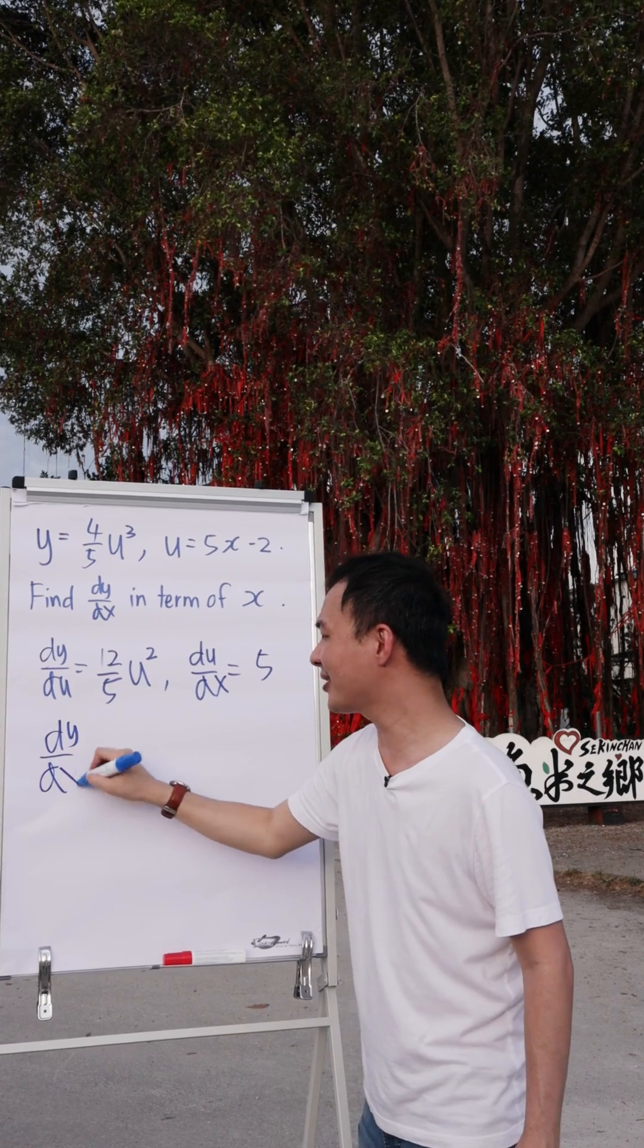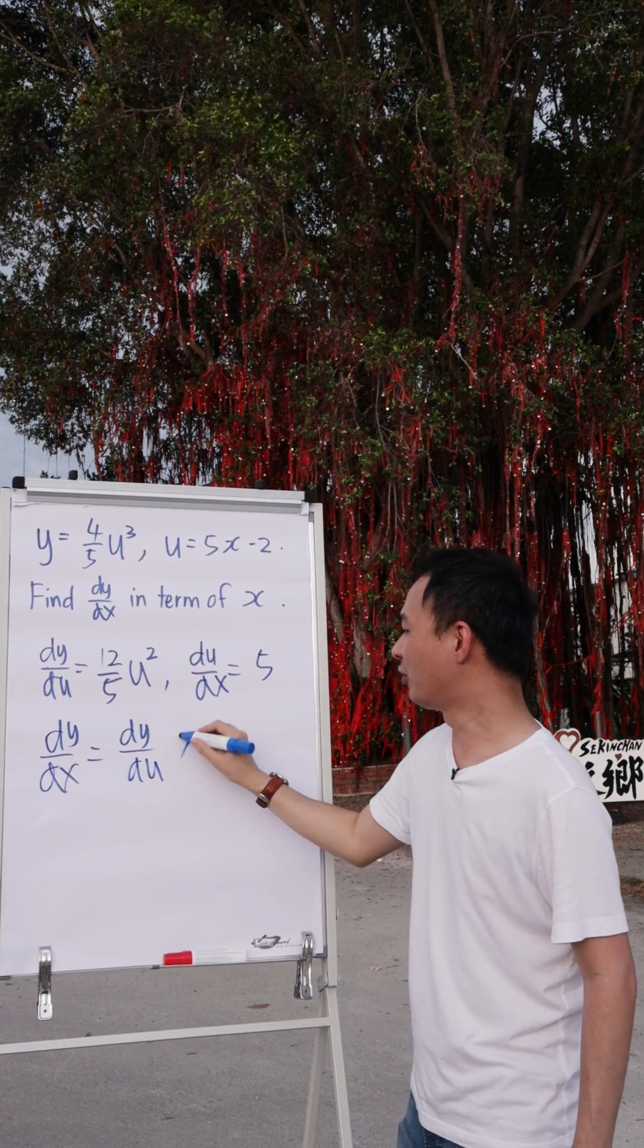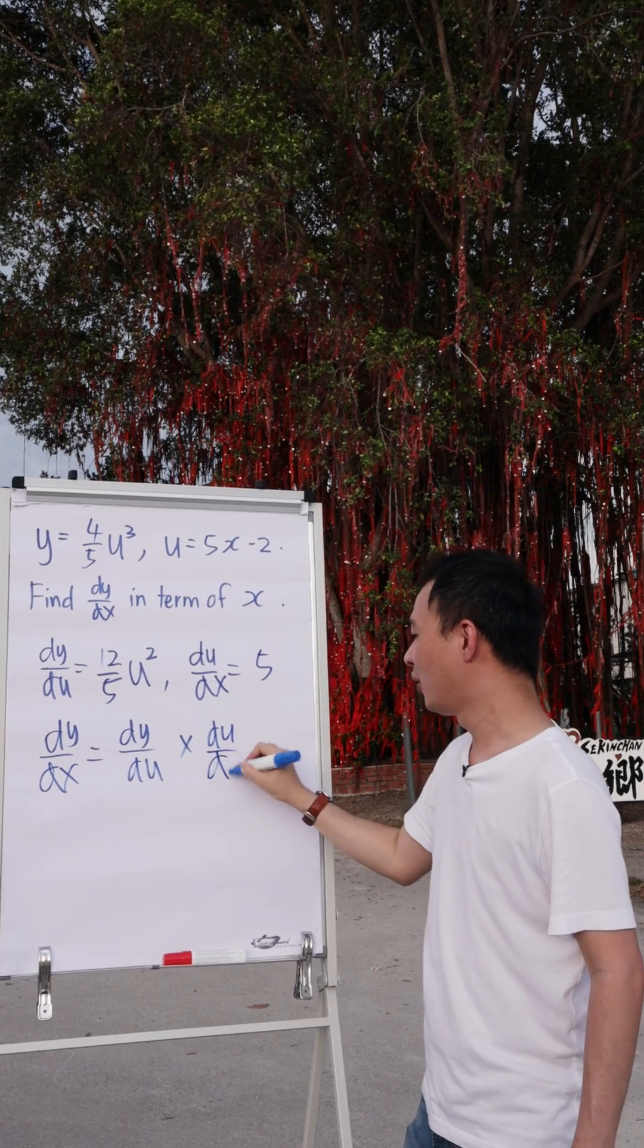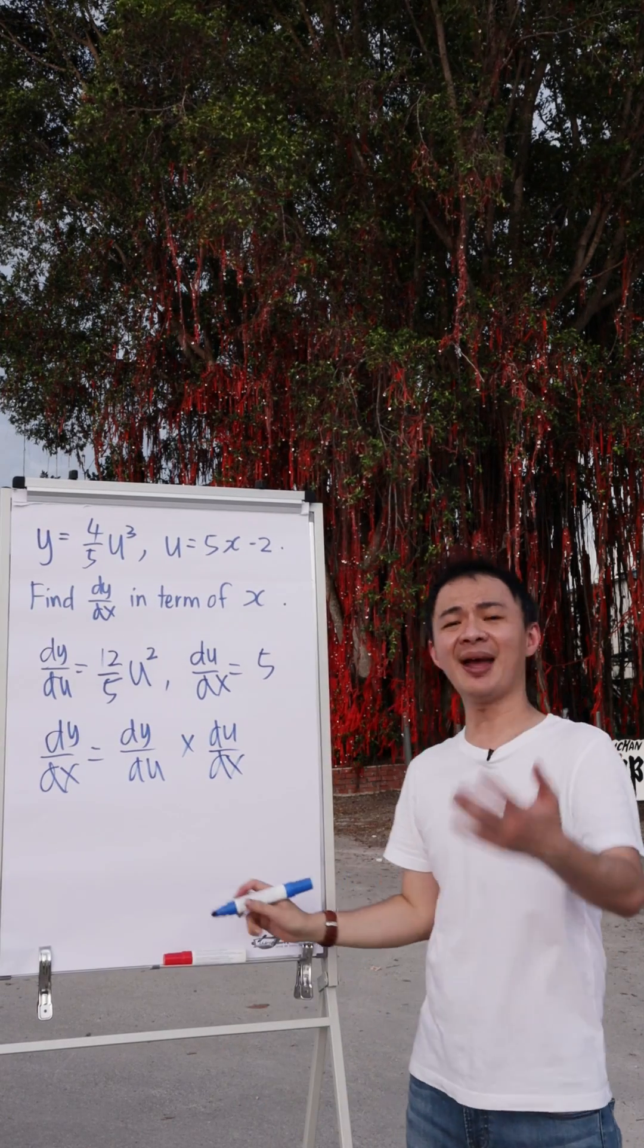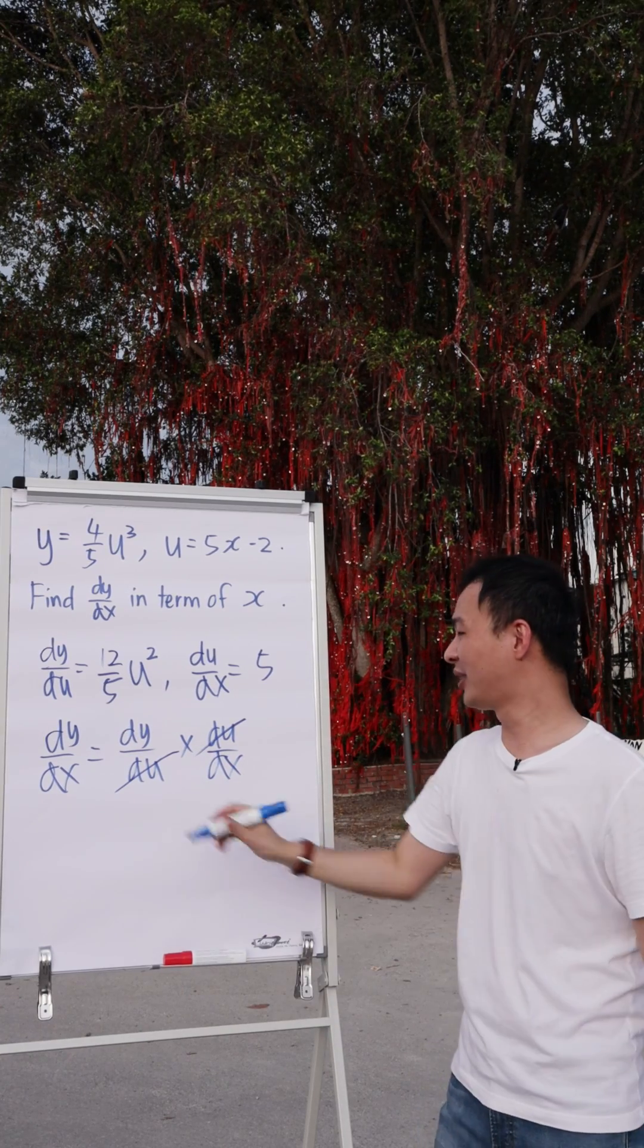So how am I going to connect both of these? We need to use the chain rule for dy/dx. Chain rule tells me it equals to dy/du multiply du/dx. Why do I know that? Because imagine if du and du you can simplify, you're getting back the dy/dx, isn't it?